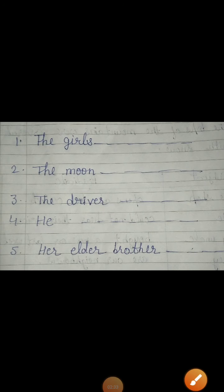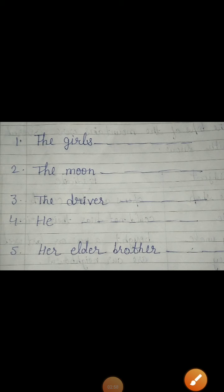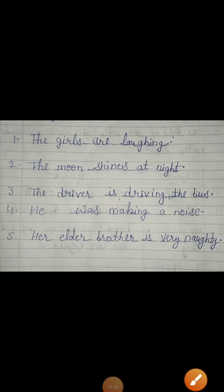Fifth is her elder brother. You can put here like: her elder brother is very naughty, her elder brother is very cute, her elder brother is very intelligent. So dear students, in this way, you can make these sentences complete sentences.